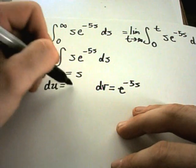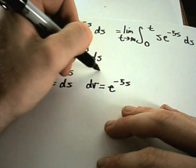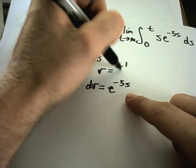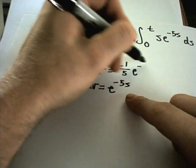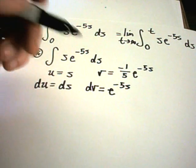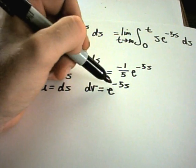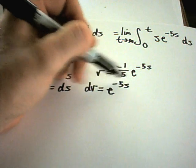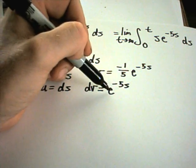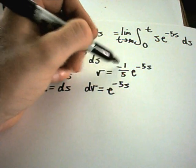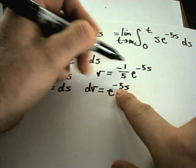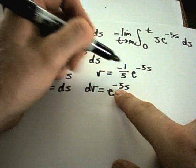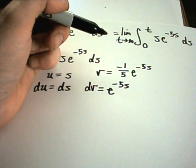du is just going to be 1·ds. If I integrate e^(−5s), I'm going to get −(1/5)·e^(−5s). There's a little trick: if you have e to a linear variable, you divide by whatever the coefficient is — in this case dividing by −5, which is equivalent to multiplying by −(1/5). That's what the antiderivative will be.